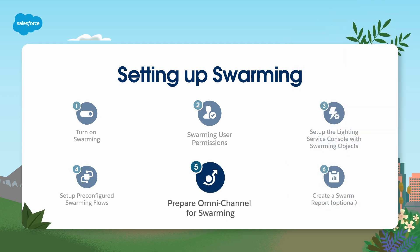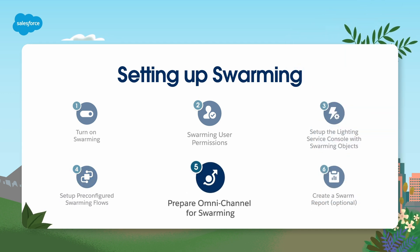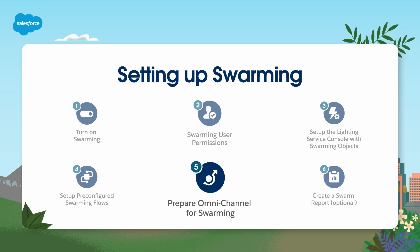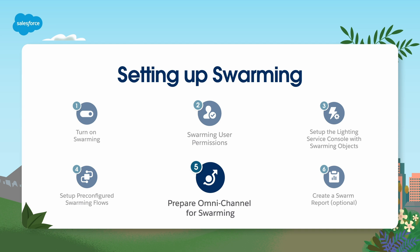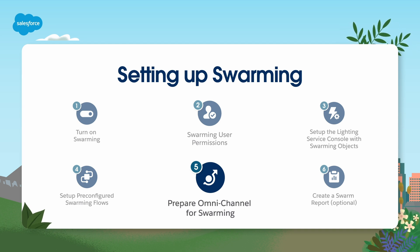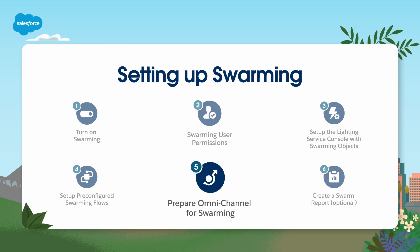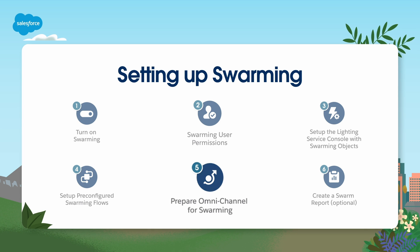Prepare Omnichannel for swarming. Omnichannel can help make swarming even more effective with Expert Finder, helping you add SMEs to a swarm. Omnichannel can also ensure agents who have availability and the right skills are added to swarms, which can help to close cases even faster.